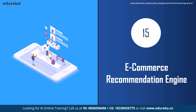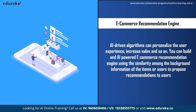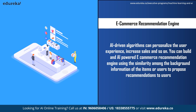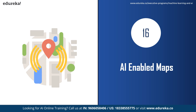The next AI project idea is an e-commerce recommendation engine. You can build one using similarities among background information of items or users to propose recommendations. For example, if a user searches for Apple phones, the engine recommends only Apple phones. Alternatively, you can identify trends in previous user-item interactions and advise similar recommendations. For instance, if a person buys a formal shirt, the engine recommends more formal clothing and accessories using artificial intelligence.